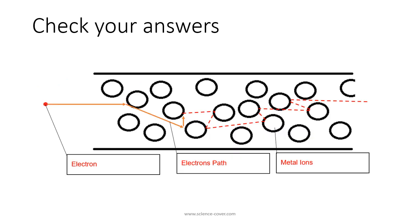In the second question we had to label the diagram. We have the electron on the left-hand side, the electron path represented by the arrows, and then the metal ions which the electron is colliding with. We then had to complete the path the electron would take down the wire. It doesn't really matter what path the electron takes, as long as when it comes across a metal ion it collides with it and moves back a little, then carries on its journey forward.